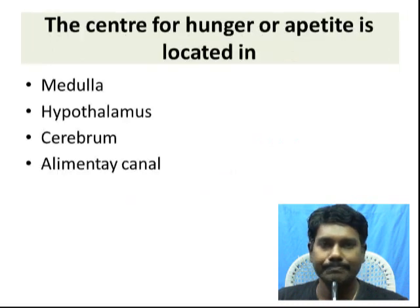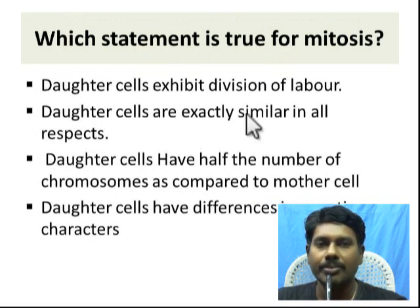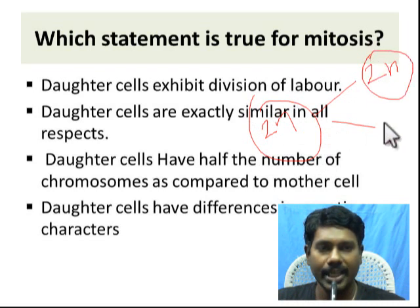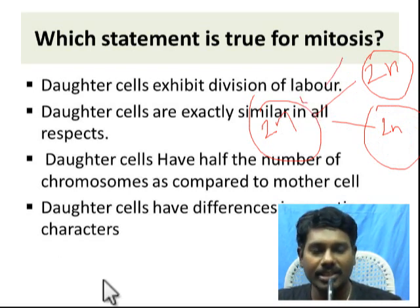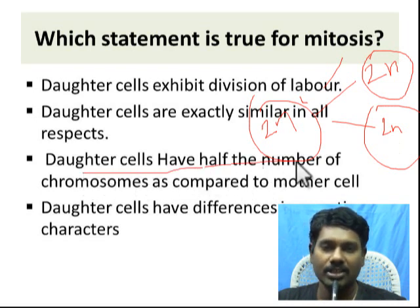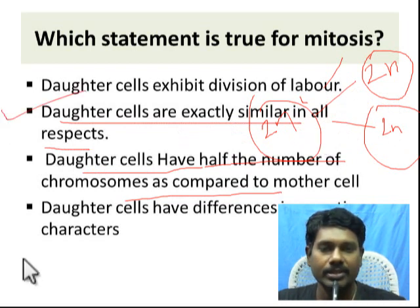Which statement is true for mitosis? Mitosis gives rise to daughter cells which are in the same nuclear condition, similar to that of the parent. Meiosis with 2N will give rise to 4 haploid (N) cells as a result of meiosis 1 and meiosis 2. Daughter cells have half the number of chromosomes compared to the mother cell, whereas in mitosis the daughter cells are exactly similar in all respects. So the second option is the right one.